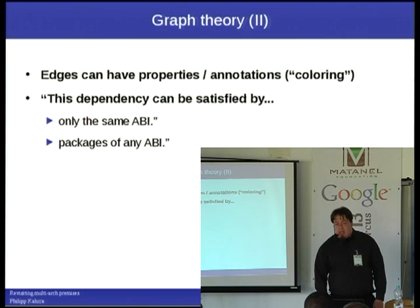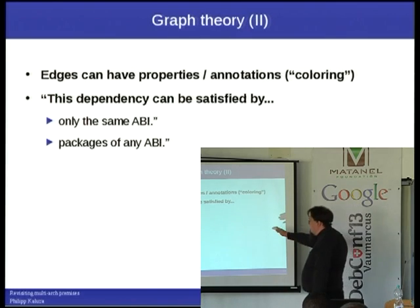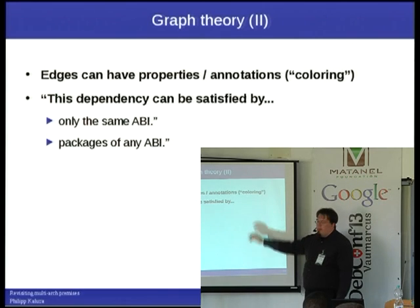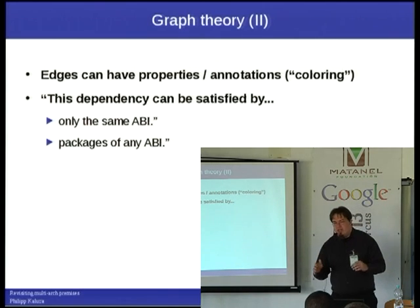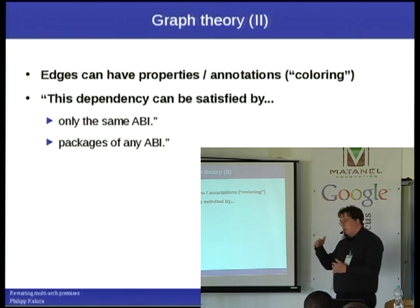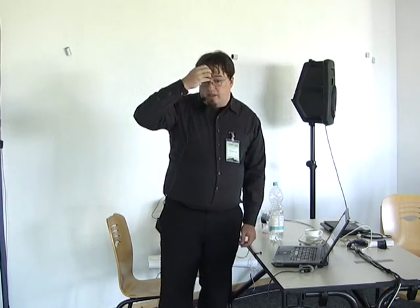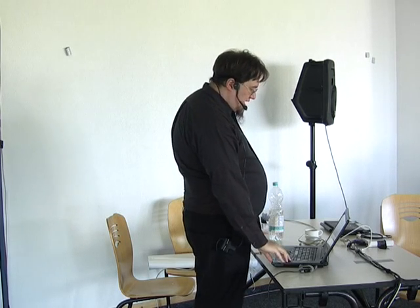So that would be an edge property, annotation, or in mathematical graph theory sometimes also known as coloring. Of course this is still a bit implicit even if we say 'only the same API' — we could get really explicit and say a package of architecture AMD64 has this dependency and this dependency can only be solved by another package of AMD64. The distinction between implicit and explicit is something I'll come back to a bit later.